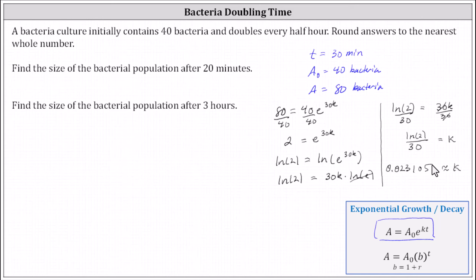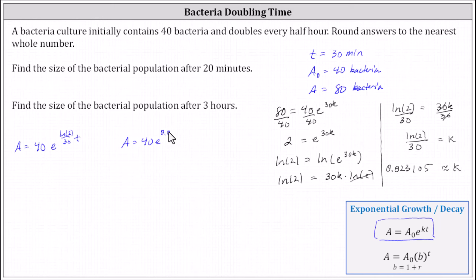Now that we know k, the exponential equation with base e that models the given situation — using the exact value of k — is a equals 40 times e raised to the power of (ln(2)/30)·t. Or using the approximation for k, we have a equals 40 times e raised to the power of 0.023105t.